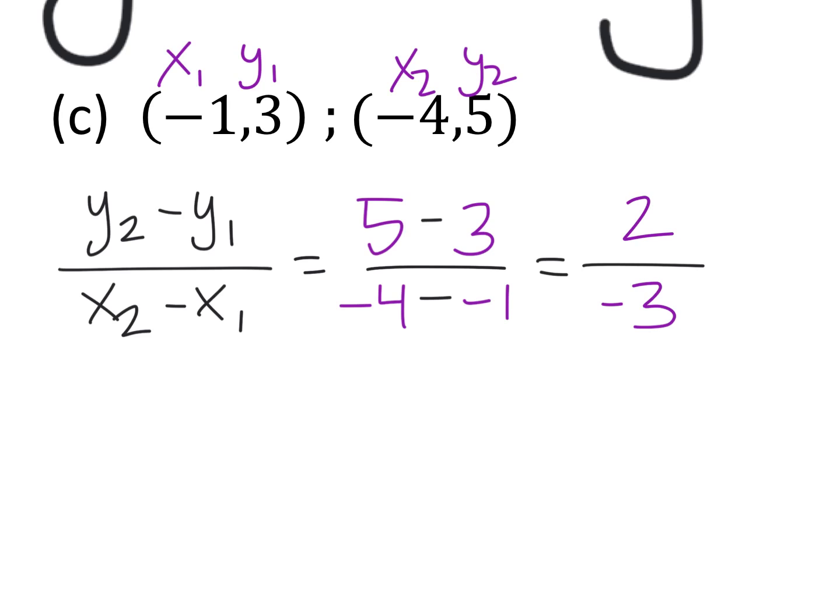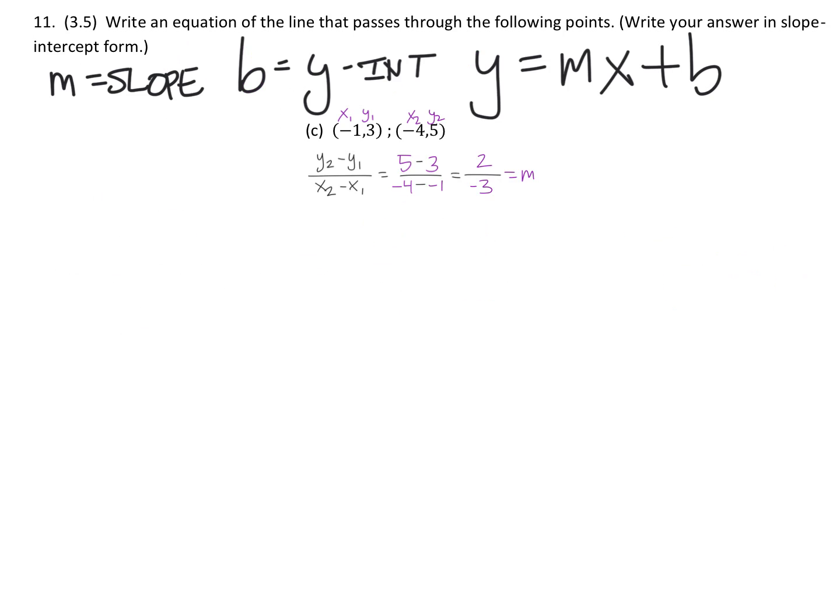The numerator should be easy enough: 5 minus 3 is 2. So this is our slope and we'll go ahead and look in the equation and replace that with 2 over negative 3. Now some of you may be wondering why I put the negative with the denominator. That just has to do with how we set this up. If you had made this point two and negative 4, 5 as your point one, the only difference between your slope and mine is that the 2 is negative for you and the 3 is positive.